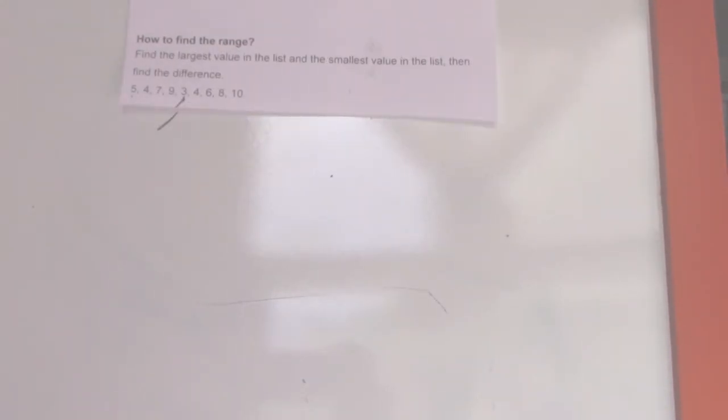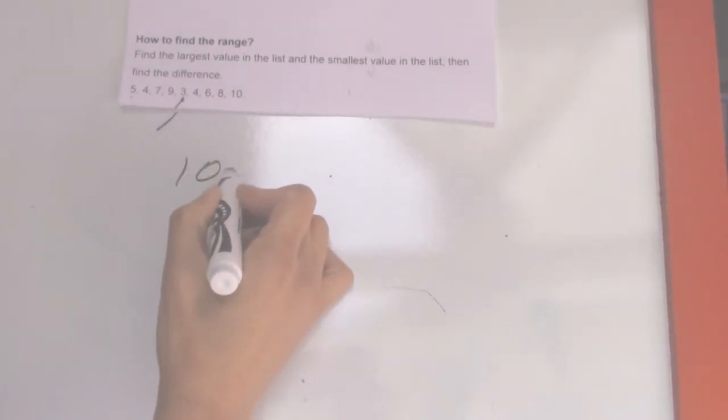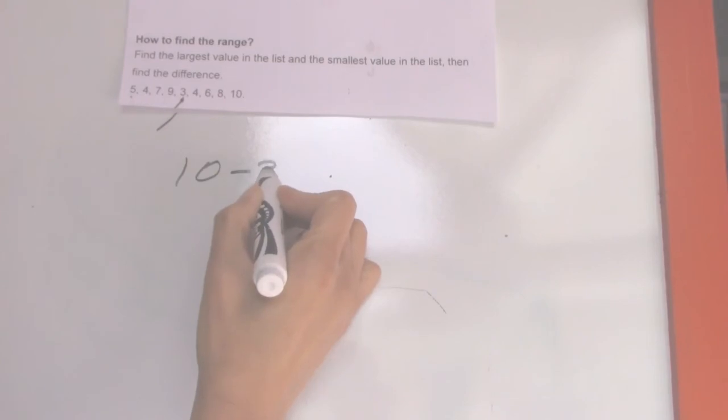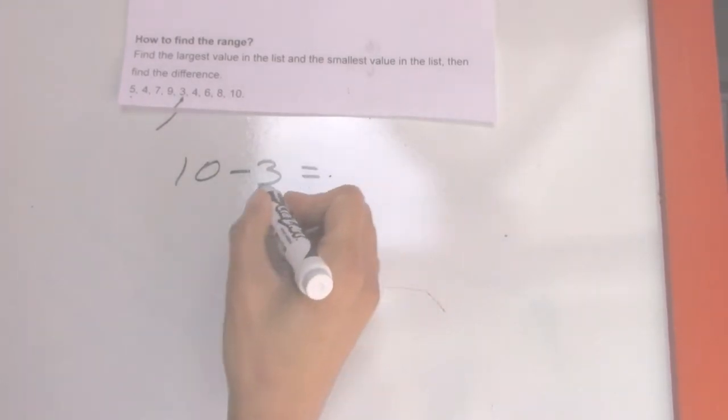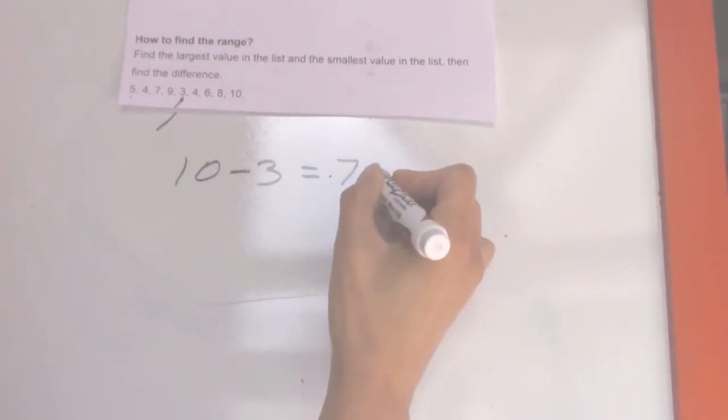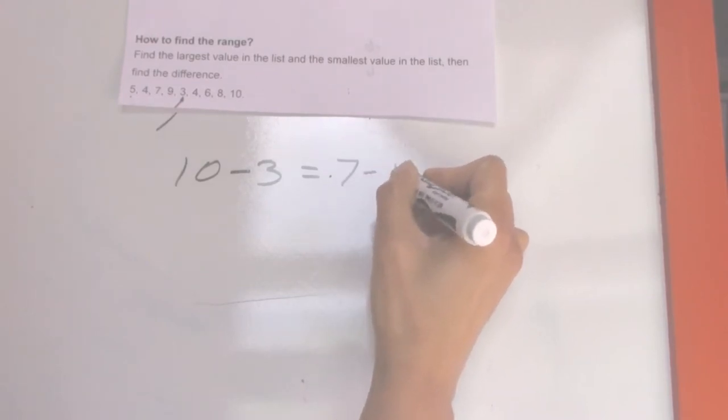Next, how to find the range? Find the largest value in the list and the smallest value in the list, then find the difference. The largest value here is 10, and the smallest value here is 3. So 10 minus 3 equals 7. So 7 is the range.